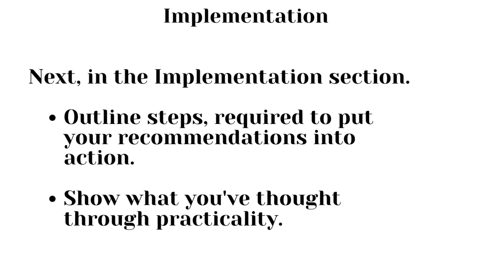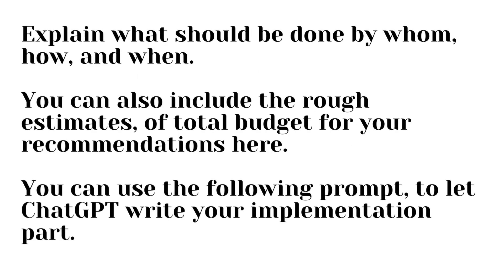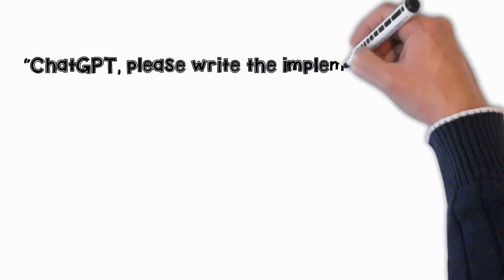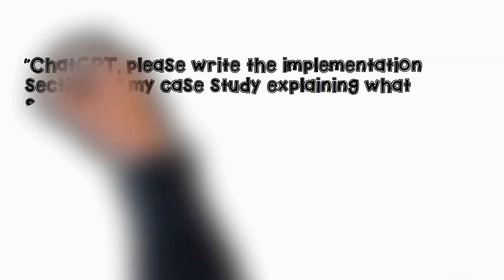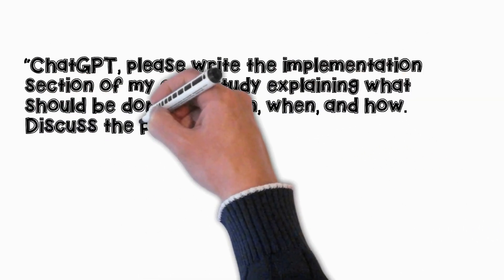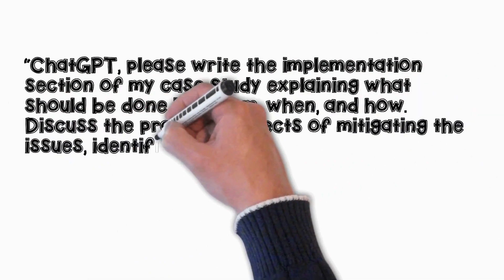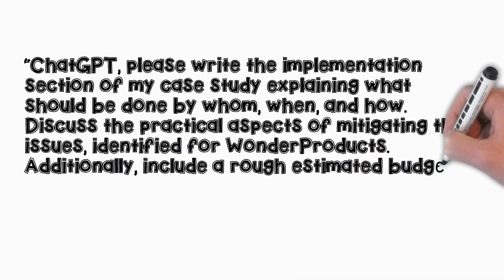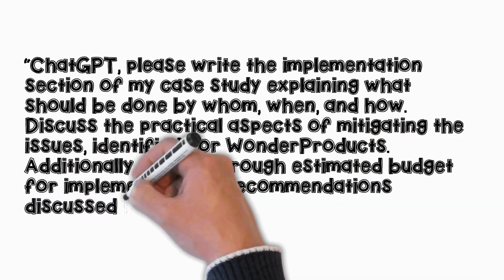Next, in the Implementation section, outline the steps required to put your recommendations into action — show that you've thought through practicality. Explain what should be done by whom, how, and when. You can also include rough estimates of the total budget for your recommendations here. Use this prompt: 'ChatGPT, please write the implementation section of my case study, explaining what should be done by whom, when, and how. Discuss the practical aspects of mitigating the issues identified for Wonder Products. Additionally, include a rough estimated budget for implementing the recommendations discussed in this case study.' Don't just use this prompt as-is — use your own words and style to make the case study unique and plagiarism-free.